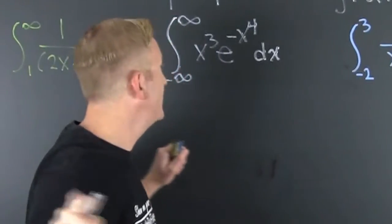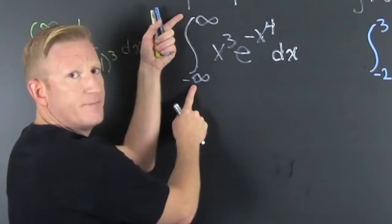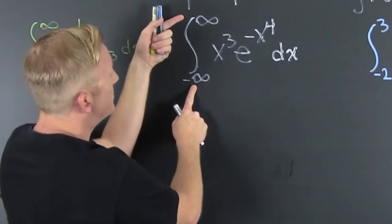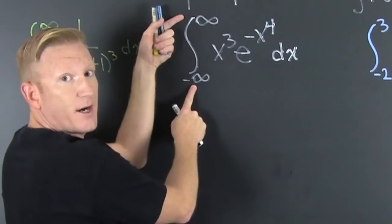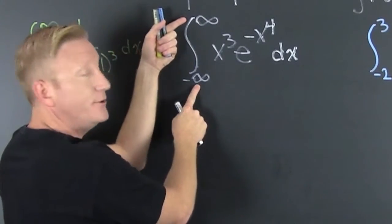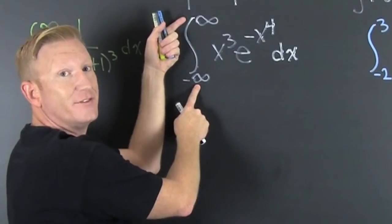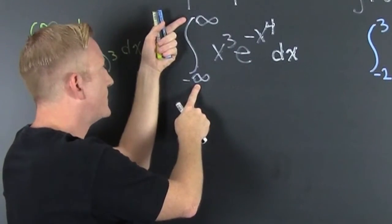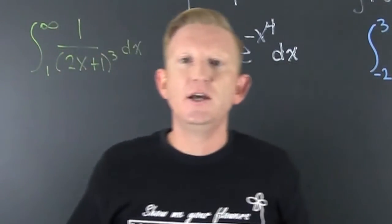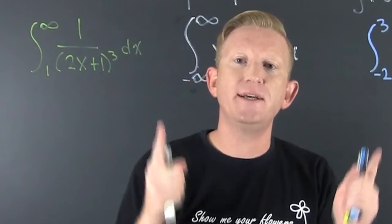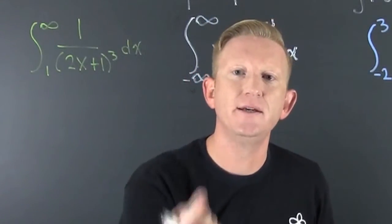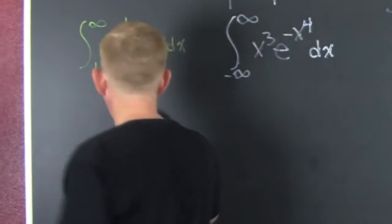And then the same over here. Not the gap, no. This one has a bad spot. Well, how do we deal with this? We deal with this by making a closed interval and running a limit. So let's go take a look at this guy.